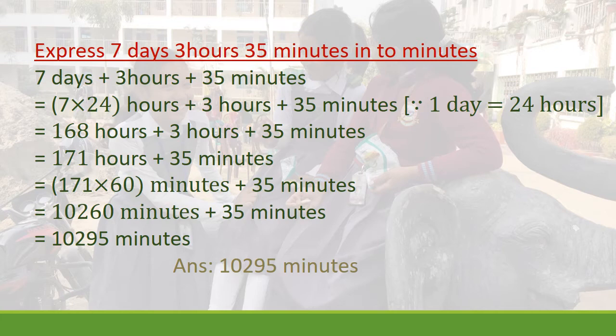We know that 1 hour equals 60 minutes. So next we convert 171 hours to minutes: 60 times 171 equals 10,260 minutes, plus 35 minutes. Adding those gives us 10,295 minutes. So the answer is 10,295 minutes.